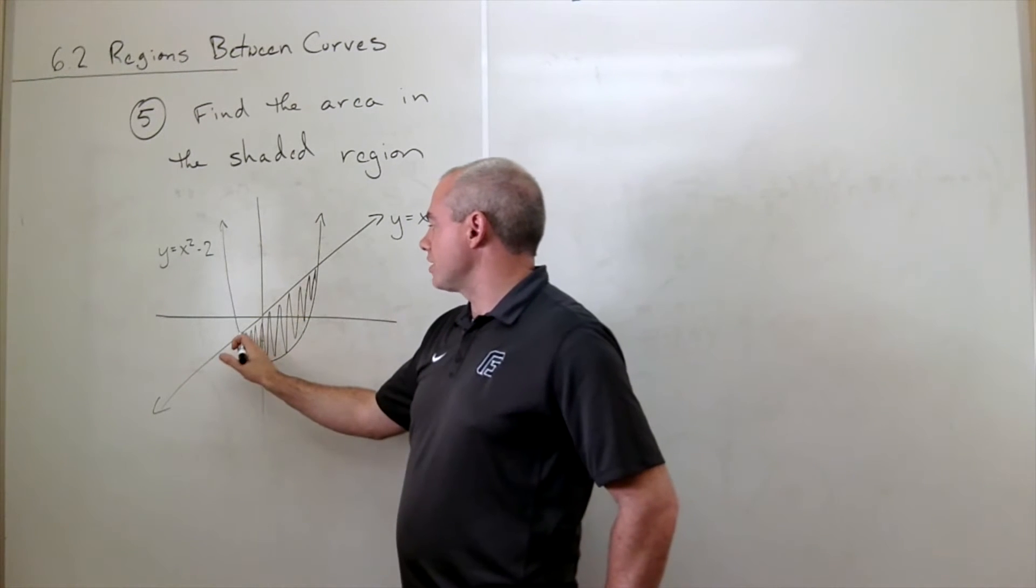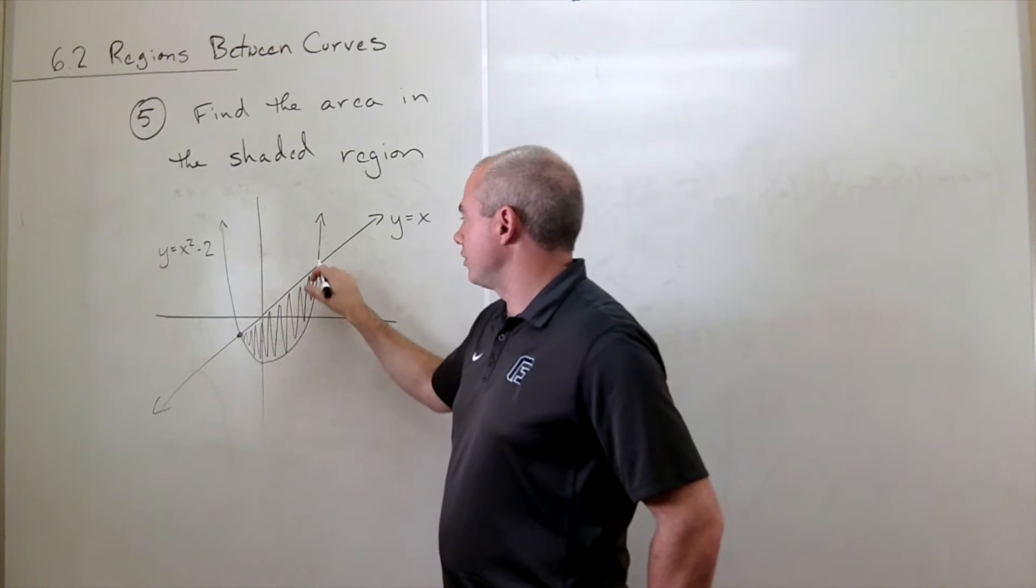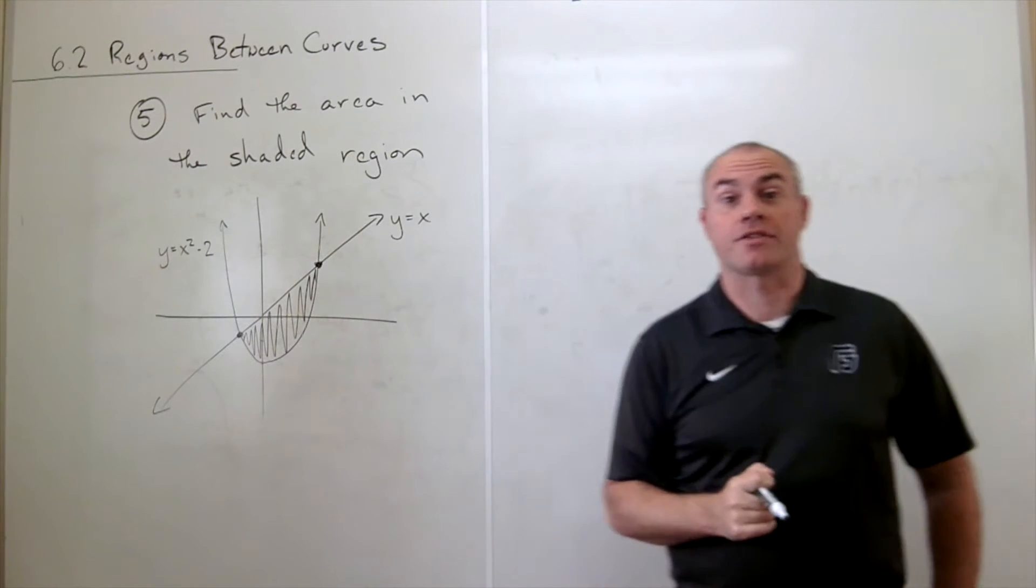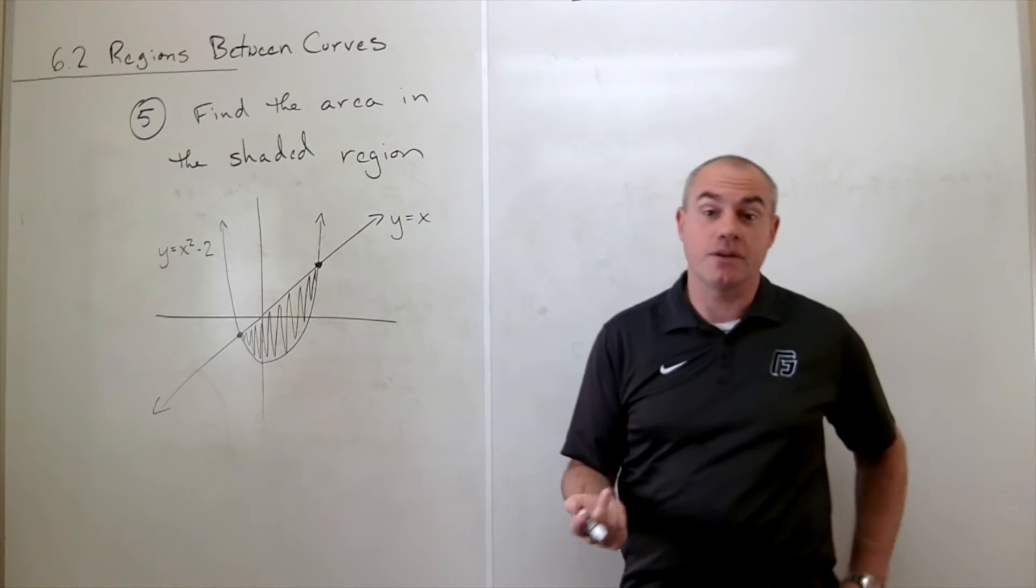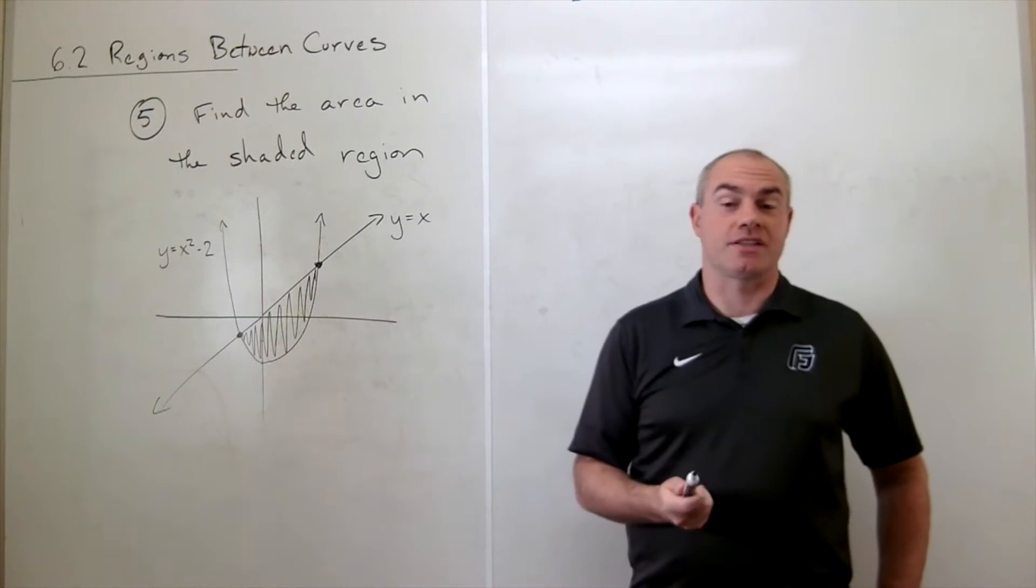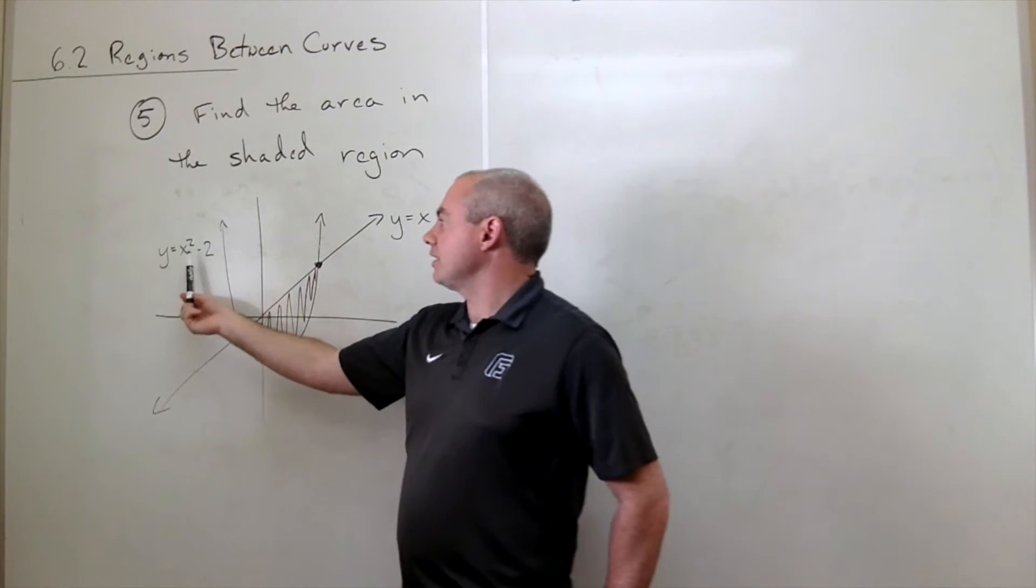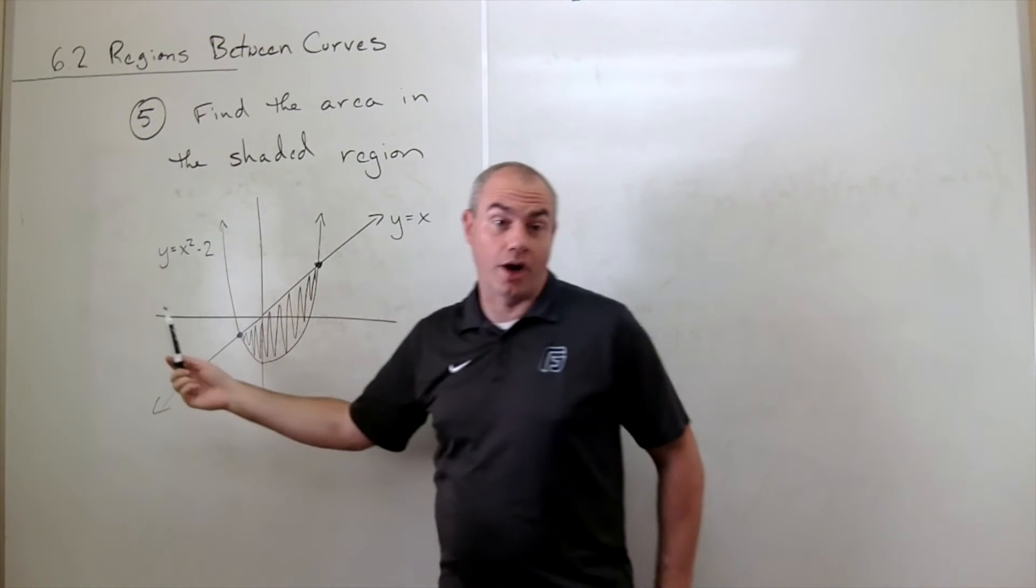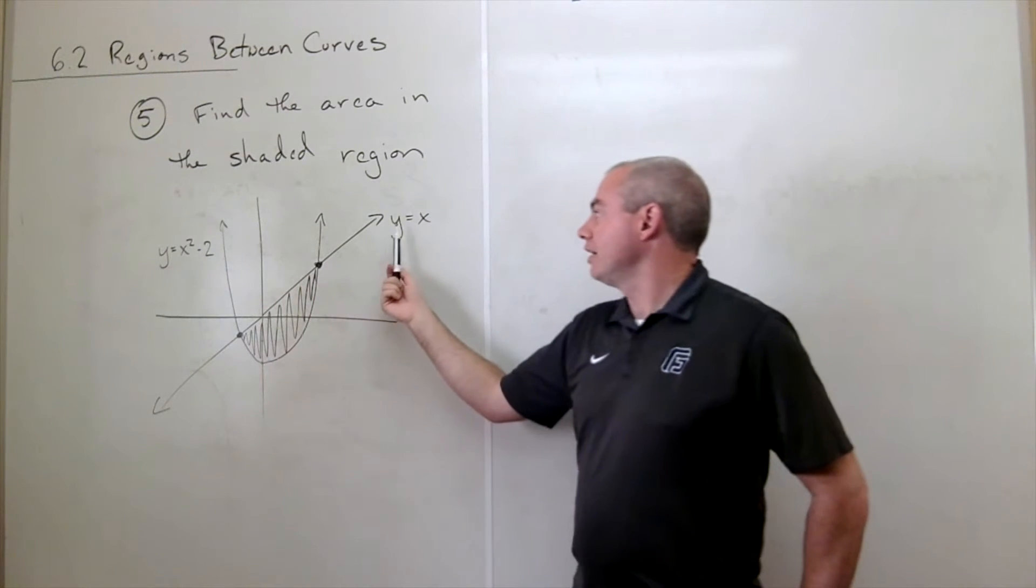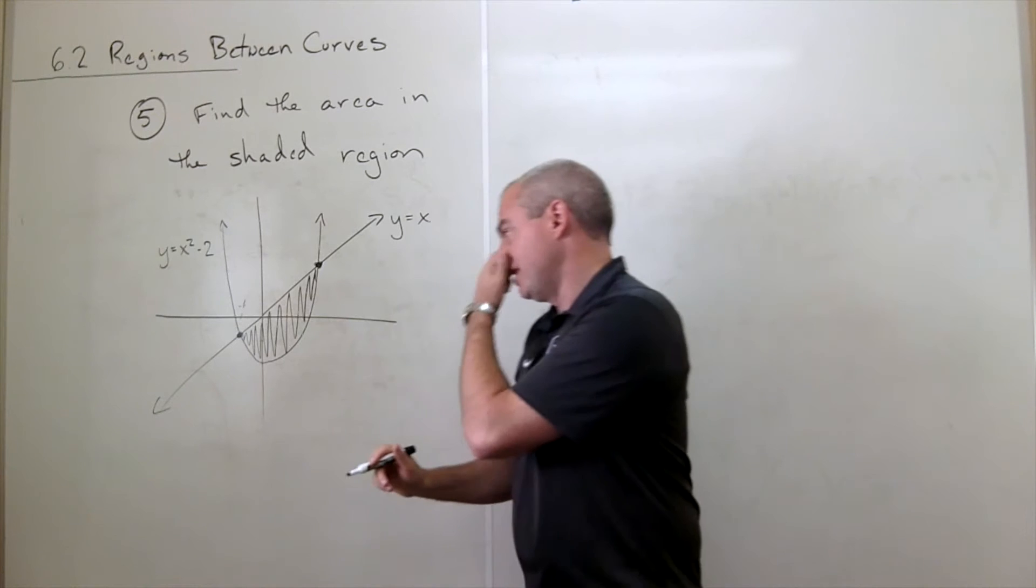So the first thing we really need to know here is, what is the x value of this spot where the two curves cross? And what is the x value of this spot where the two curves cross each other? So the way that we can find that is we could just set the two curves equal to each other and then solve for x. Or another way to do it is we could just kind of eyeball it. And I think it's pretty clear right here that if I let x equal negative one, then this guy is one minus two, which is negative one, and this is negative one. So negative one is one of the points.